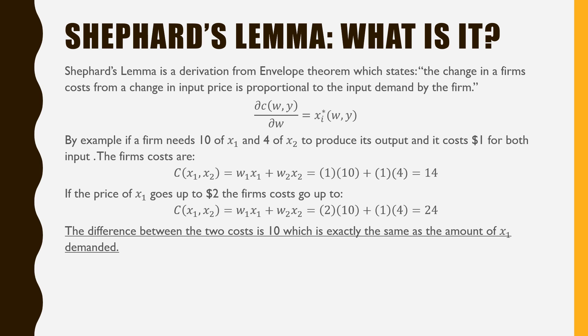By example, if a firm needs 10 of x1 and 4 of x2 to produce its output and it costs $1 for each input, the firm's costs are $14.